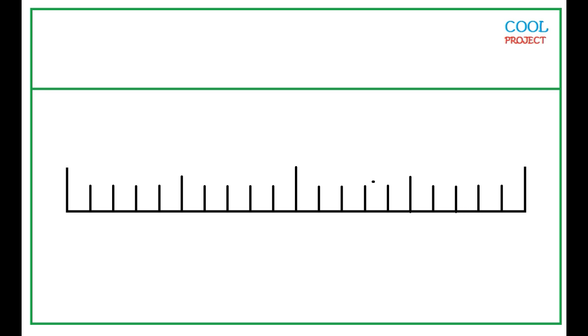A centimeter of a ruler is divided into 10 equal parts. If this mark is 1 and this mark is 0, the next mark after 0 is 0.1.